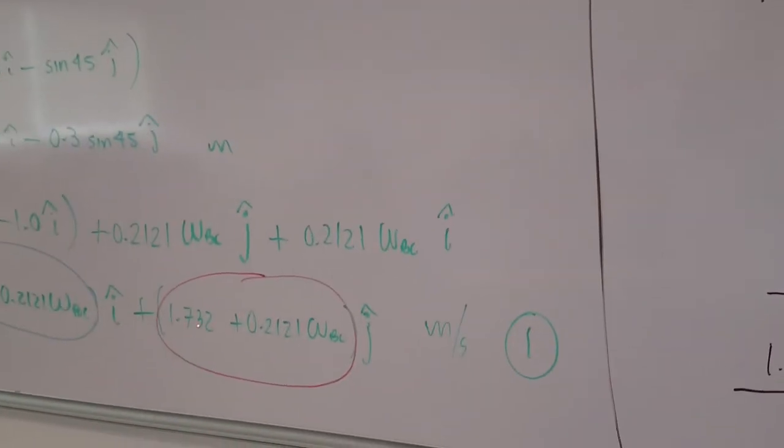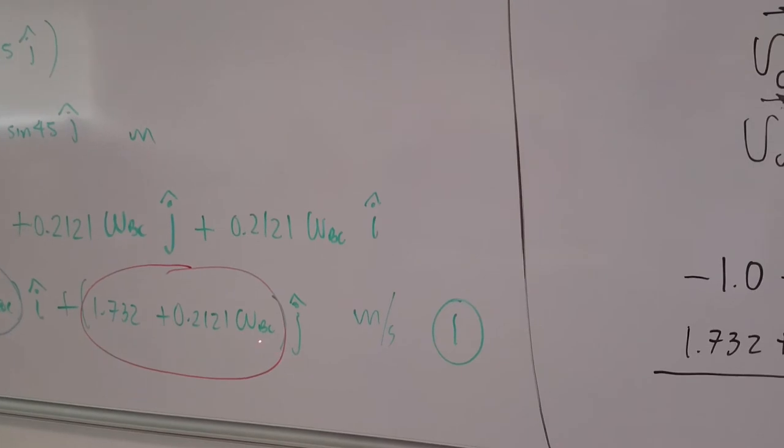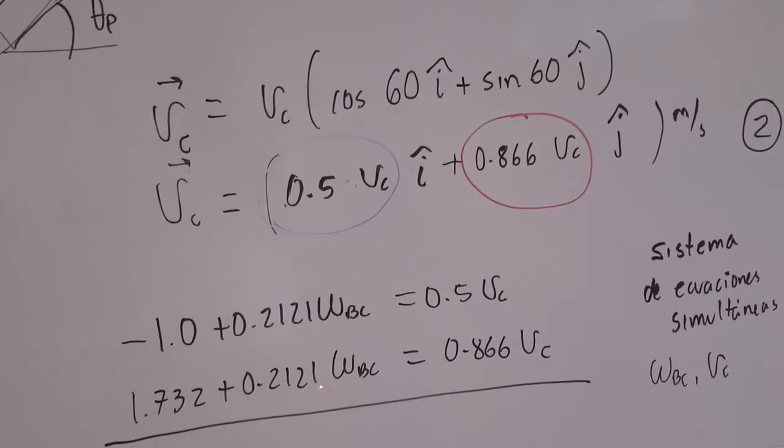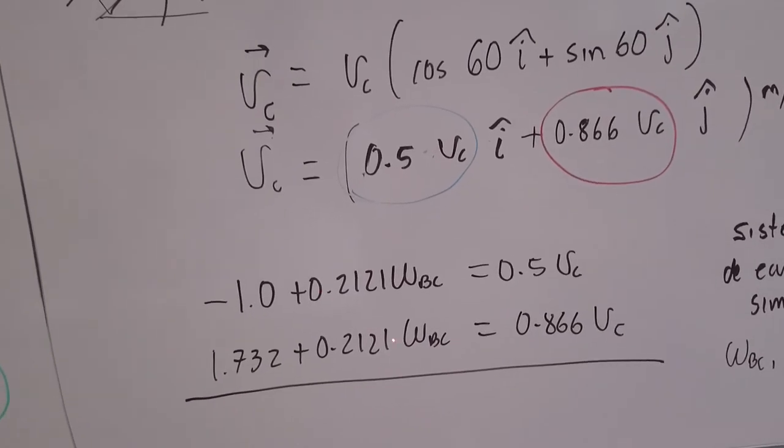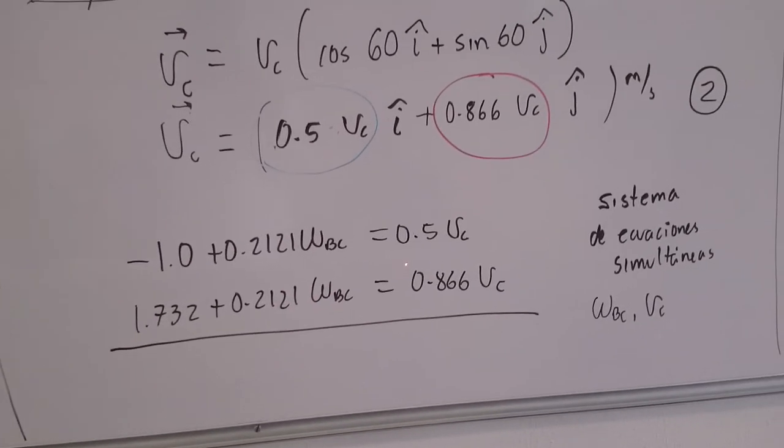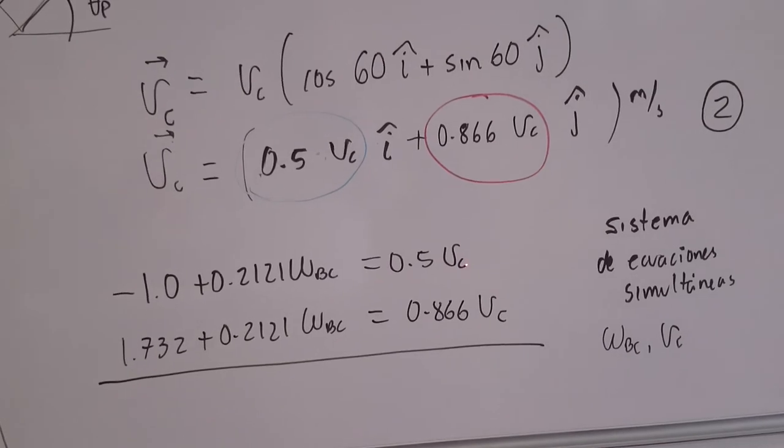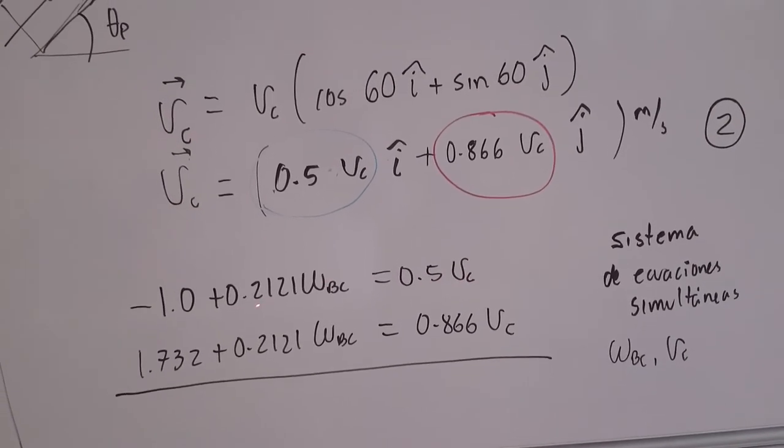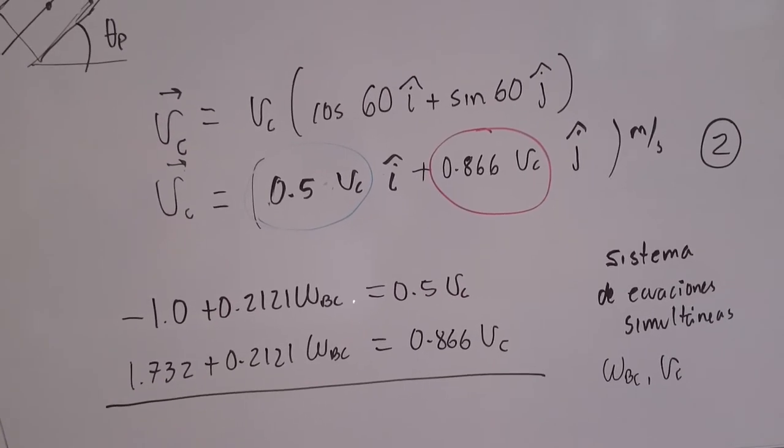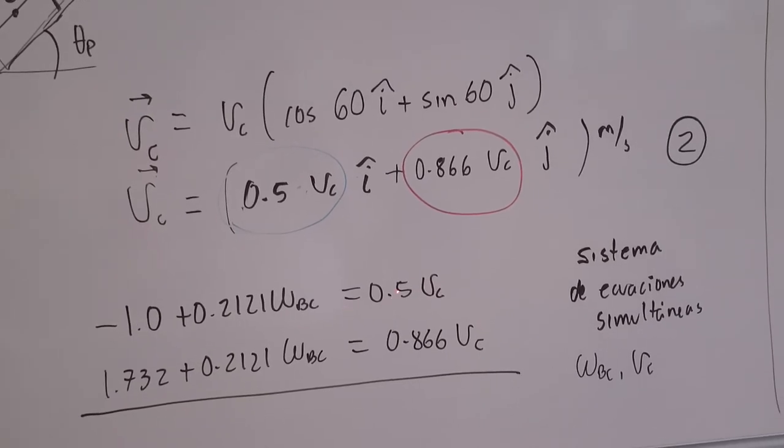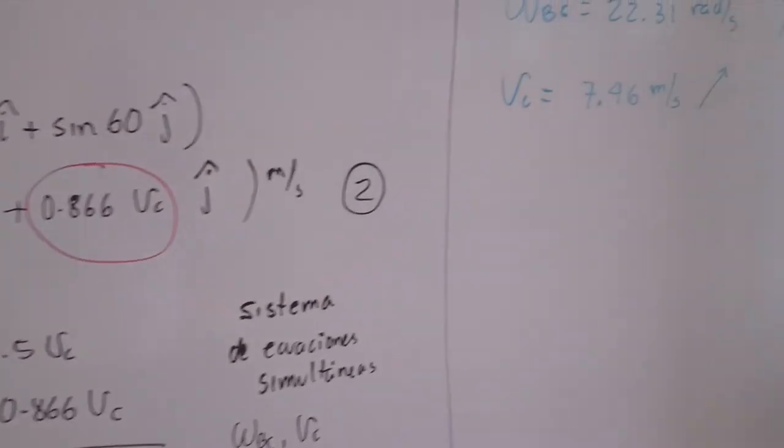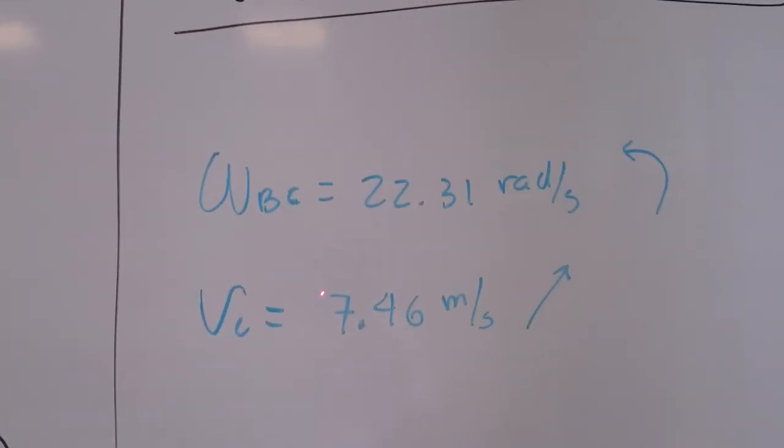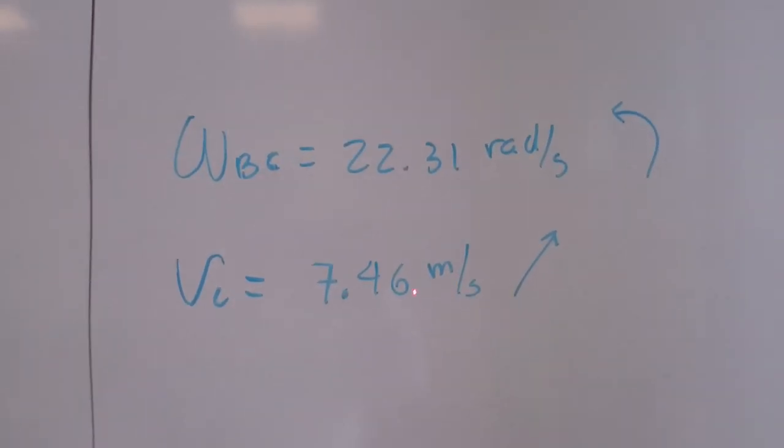And we do the same for the coefficients of j in the first equation and in the second equation. So we get another scalar equation. As you can see, these two equations are simultaneous equations with two unknowns: omega BC and velocity of C. Solving this system of equations, you can use your calculator or whatever method you know to solve these linear systems. We get to the solution of this problem like this.